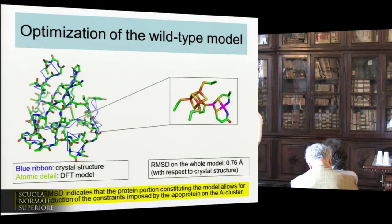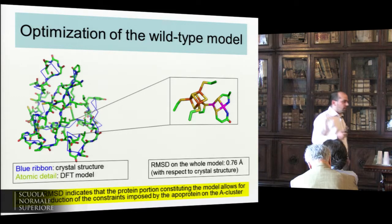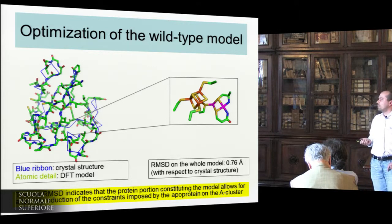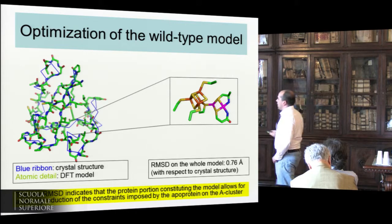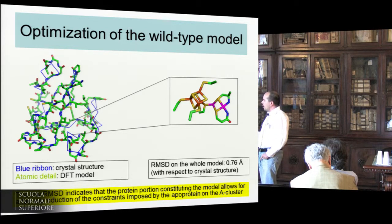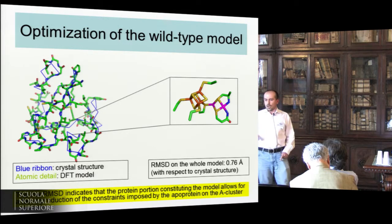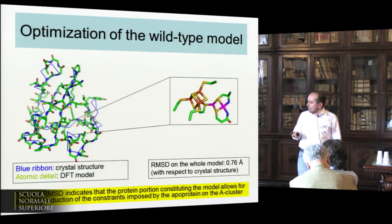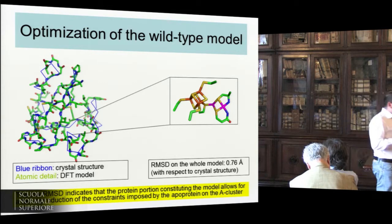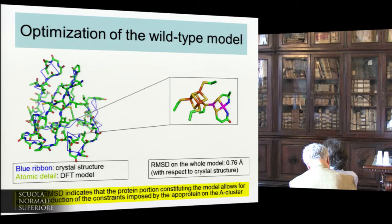Let's consider the structural features of the wild-type model of the protein treated in this way. What is interesting is that after optimization, the RMSD of this model with respect to the crystal structure is rather low — around 0.76 Ångstroms. So we can say that this model is able to reproduce the constraints of the protein matrix on the A-cluster rather fairly. We made a step forward.